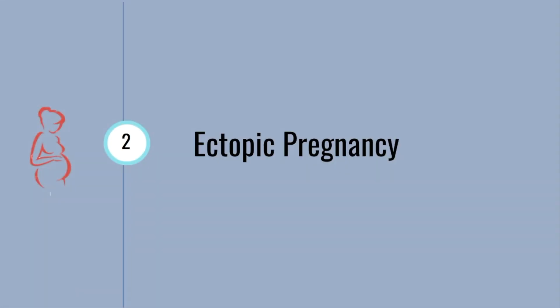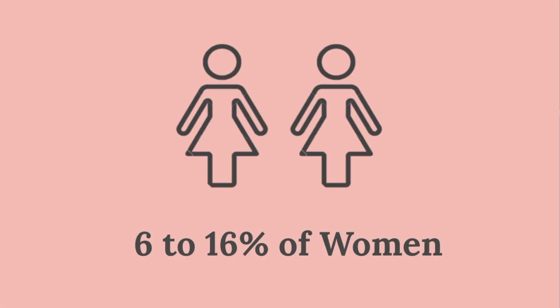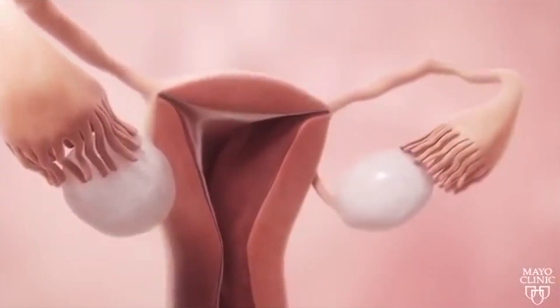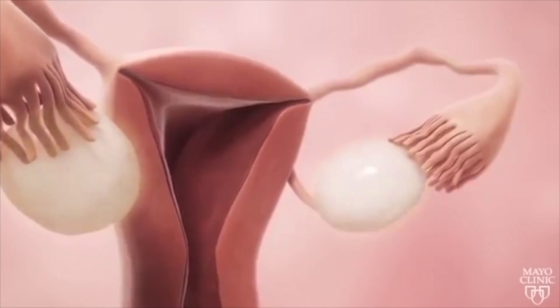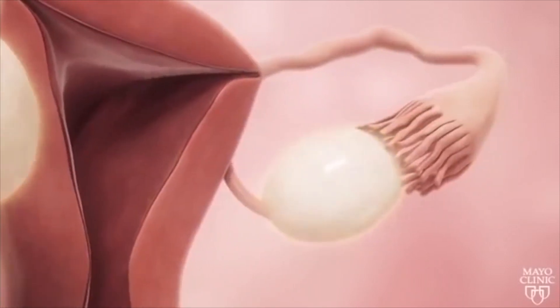Another common cause of miscarriage is ectopic pregnancies. Ectopic pregnancies are common to 6 to 16 percent of women that have miscarriages. During an ectopic pregnancy, the fertilized egg implants itself in the fallopian tube. Unfortunately, there aren't any treatments to transfer the fertilized egg from the fallopian tube into the uterus.